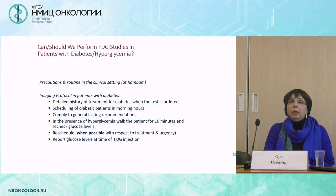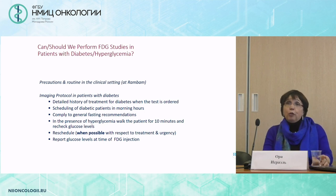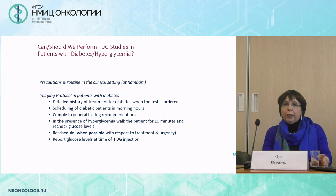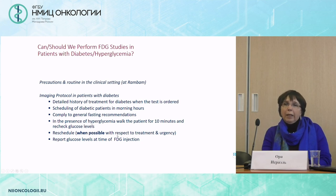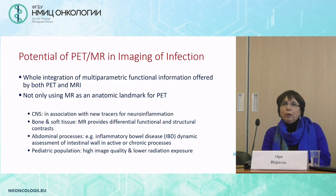Regarding the problem of diabetes, infection, and the use of labeled glucose — this could be a concern. Studies we have done show that the presence of hyperglycemia or diabetes did not have any influence on the diagnostic accuracy of our studies in patients with infection. We can and should perform FDG studies in patients with diabetes or hyperglycemia when the question is infection, with a few precautions: make sure we know the patient has diabetes, try to schedule them in the early morning, still ask them to fast, but if they come with very high glucose levels, try to reschedule when possible.